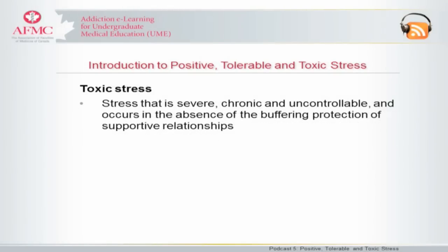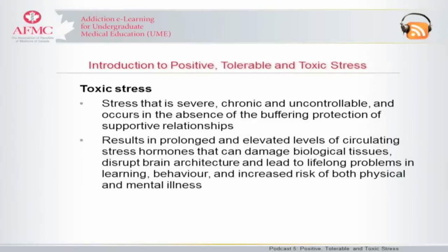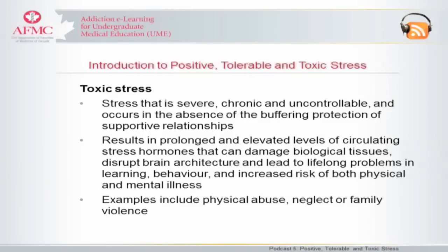Toxic stress is stress that is severe, chronic, and uncontrollable, and occurs in the absence of the buffering protection of supportive relationships. Toxic stress results in prolonged and elevated levels of circulating stress hormones that can damage biological tissues, disrupt brain architecture, and ultimately lead to lifelong problems in learning, behavior, and increased risk of both physical and mental illness. Examples include physical abuse, neglect, or family violence.